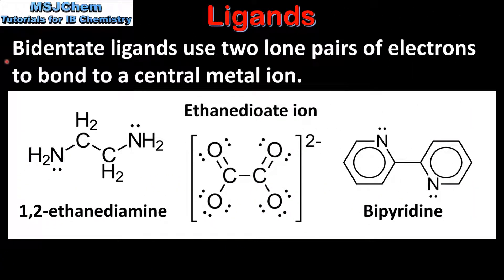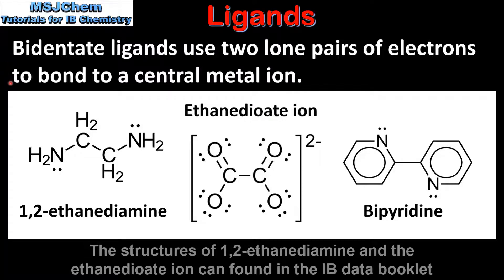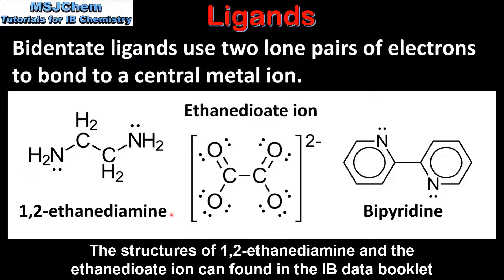Next we'll look at bidentate ligands, which use two lone pairs of electrons to bond to a central metal ion. Here we can see three examples of bidentate ligands. From left to right we have 1,2-ethane diamine, the ethane dioate ion, and bipyridine. Each of these ligands uses two lone pairs of electrons to form coordinate covalent bonds with a central metal ion.